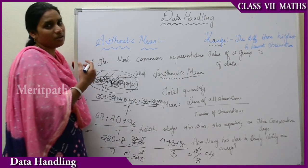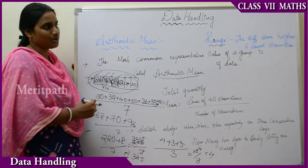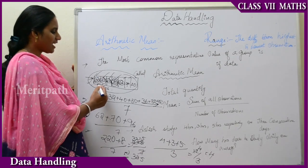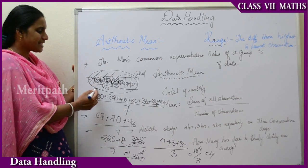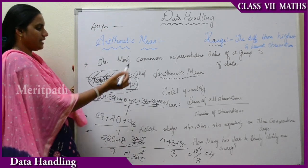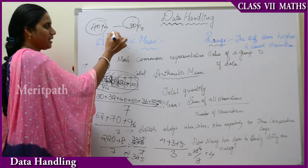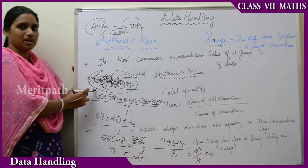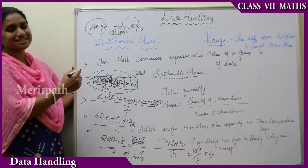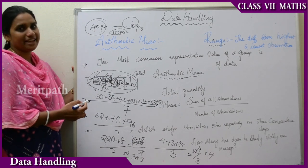Now let us see another new term, the range. What is range? The range is the difference between the highest and lowest observations. In this table the ages are 30, 32, 40, 30, 36, 30, 30. The highest age is 40 and the minimum age is 30. So the difference between the highest and lowest is the range: 40 minus 30. The range of this table is 10. Range is calculated as the difference between the highest and the lowest observations. Further we will be leading with mode and median.